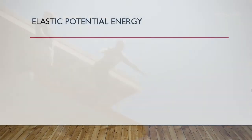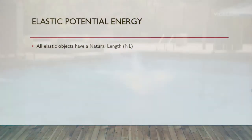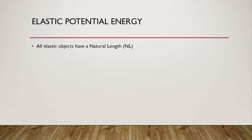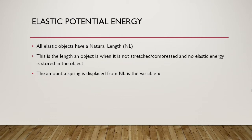Now let's dive into the components of elastic objects. All elastic objects have a natural length, abbreviated NL, which is the length of an object when it is not stretched or compressed — in other words, there's no elastic energy stored in that object. The amount a spring is displaced from its natural length is given by the variable X, which means distance displaced.